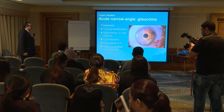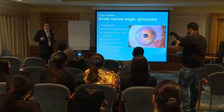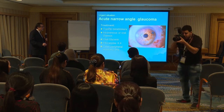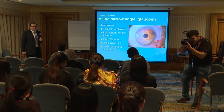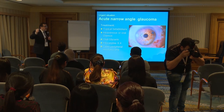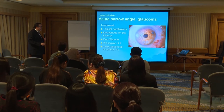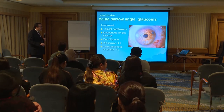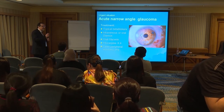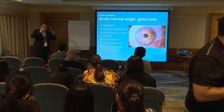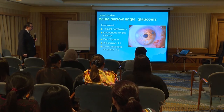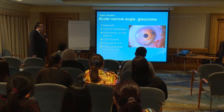Treatment of acute angle-closure glaucoma varies by specialist, but generally includes topical beta-blockers such as timolol drops, intravenous or oral Diamox 500 mg, and oral glycerin mixed with orange juice to reduce the high intraocular pressure. Some doctors use pilocarpine four times. After one hour we recheck the intraocular pressure. When the pressure is down, we can perform laser peripheral iridotomy — the aim is to help release aqueous from the posterior chamber to the anterior chamber, decreasing the high pressure. Laser can be done the same day or deferred to the next day; you cannot do laser with high pressure.